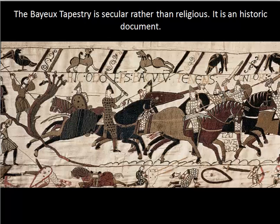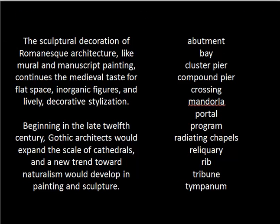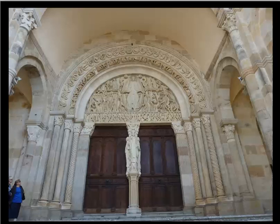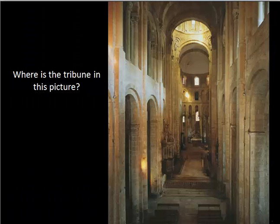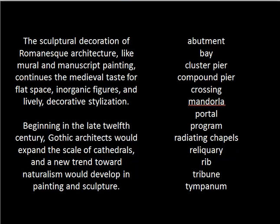In the Romanesque period, we've looked at Romanesque influence and several different things. If I may suggest you copy something down, it would be these two paragraphs that really sum up the chapter. On the right column you're going to see important words that are worth remembering: cluster pier, compound pier — you'll see an example of that. We're going to see it more easily in the Gothic period. Compound pier, clustered pier — definitely need to know. Crossing, you need to know. Mandorla, you need to know. Program, radiating chapels — definitely — and reliquary. Tribune, not so vital. Tympanum, definitely. And rib — it's worth remembering.